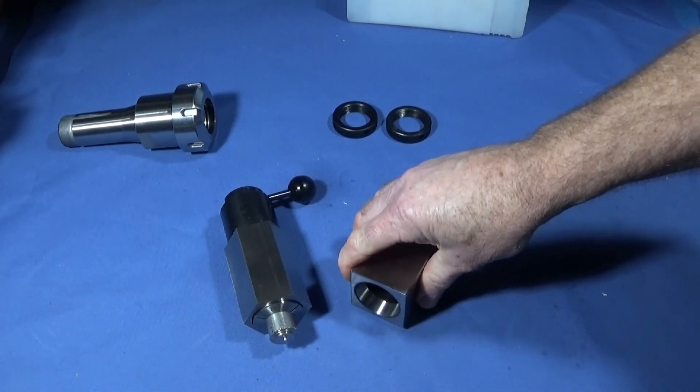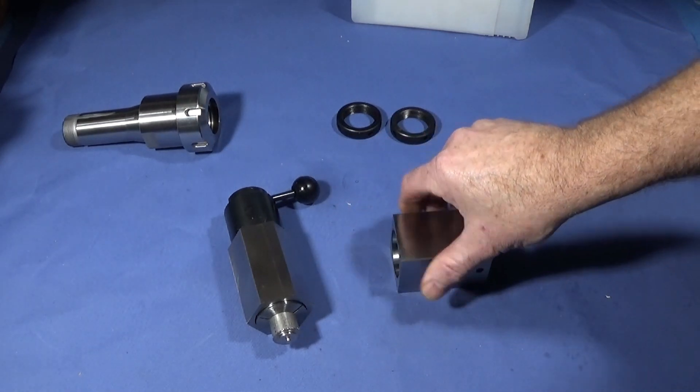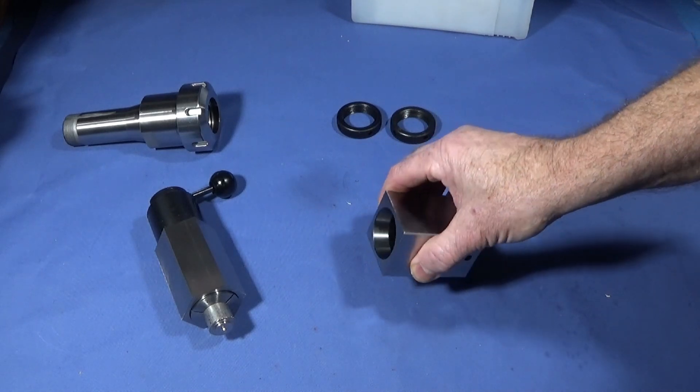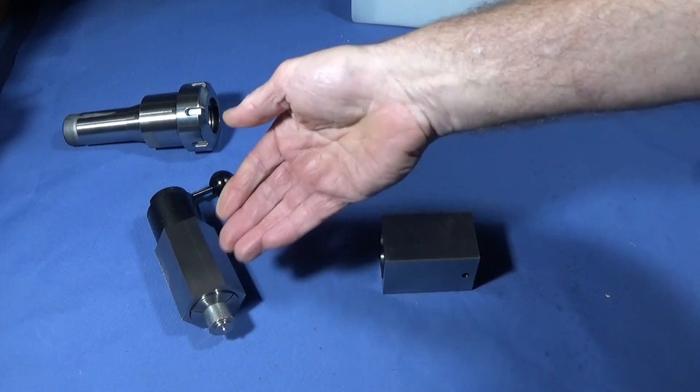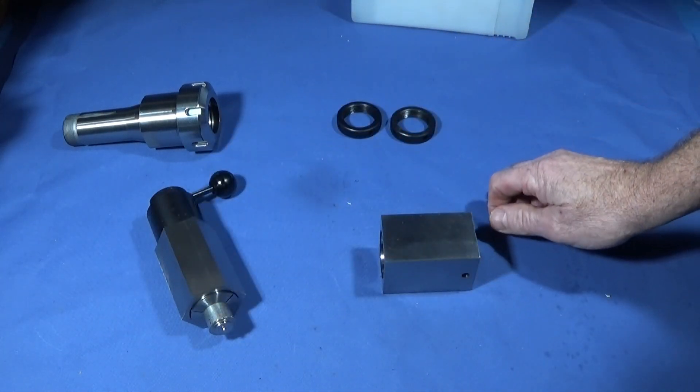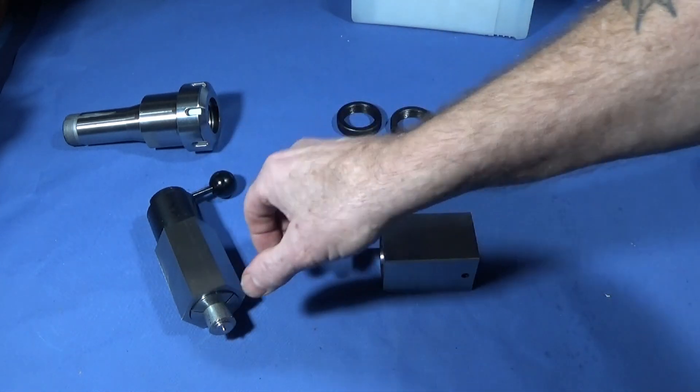One thing that I use them for a lot in the workshop is to hold in an ordinary bench vise when cutting screws to length. You can put the screws in the collet and not damage the threads, then saw them off to certain lengths.